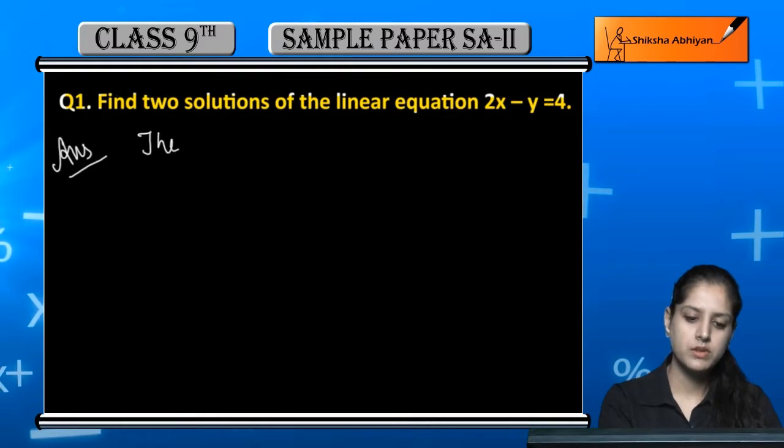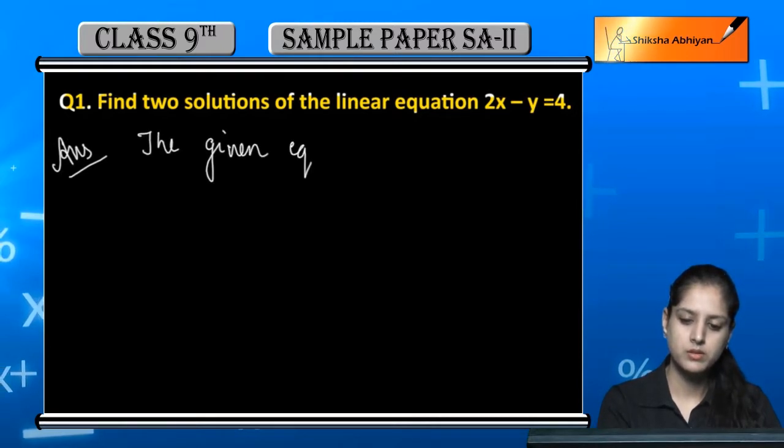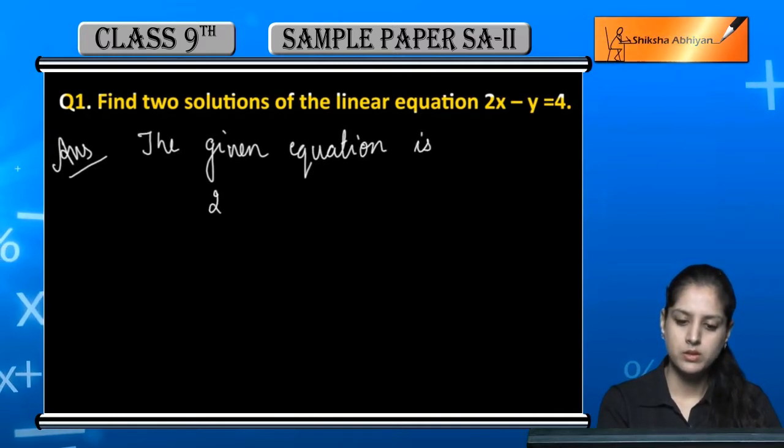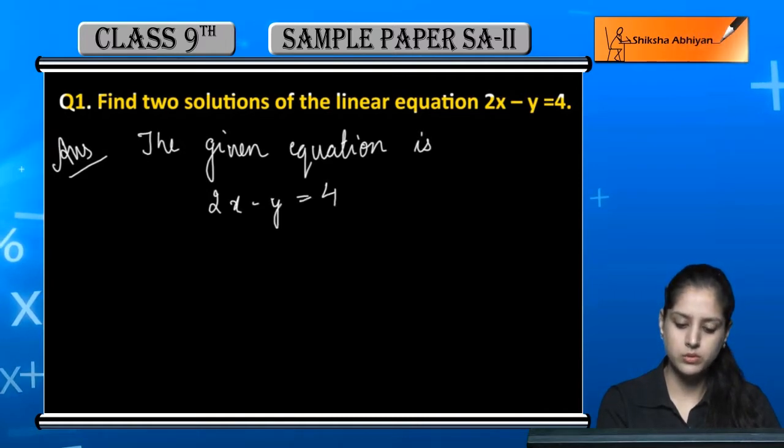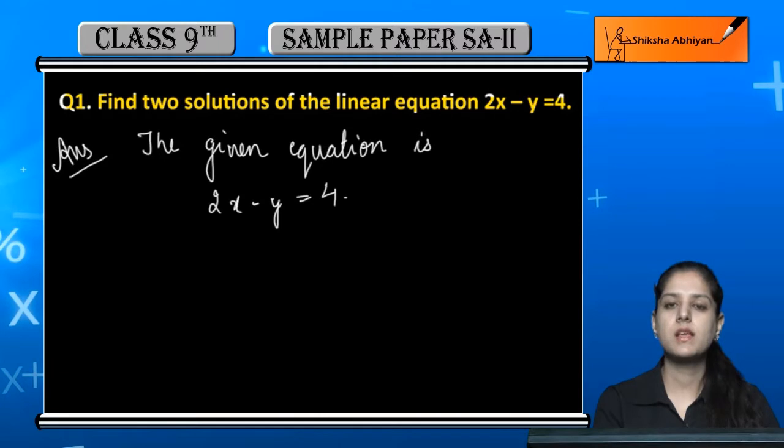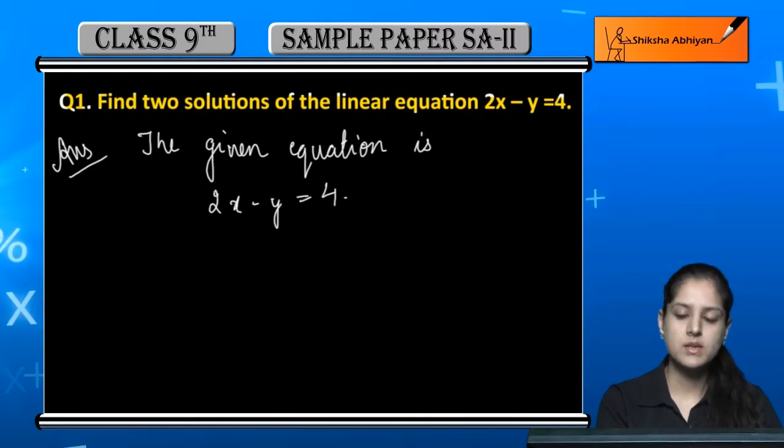So the given equation jo equation hume question mein given hai wo hai 2x minus y is equal to 4.